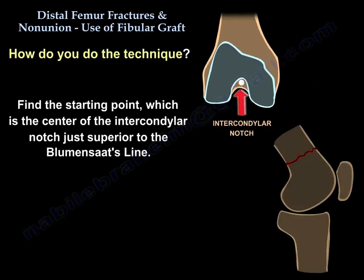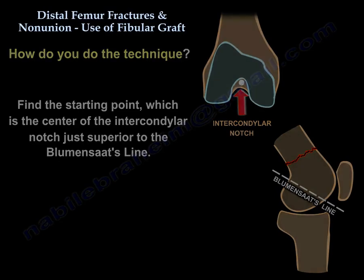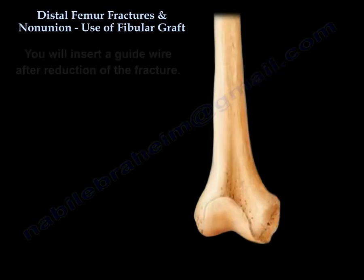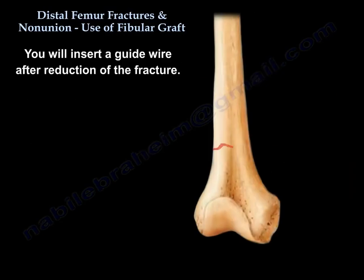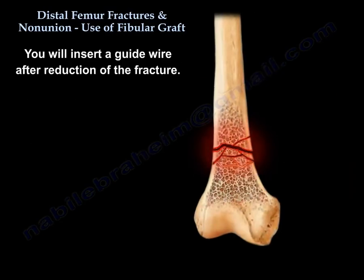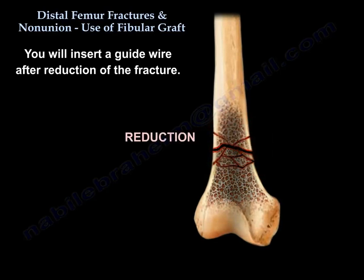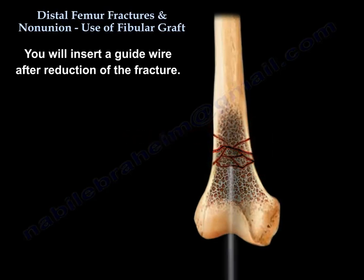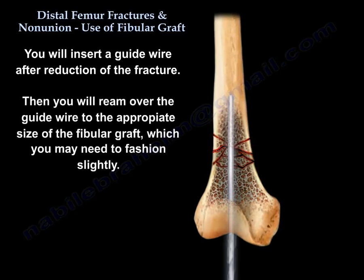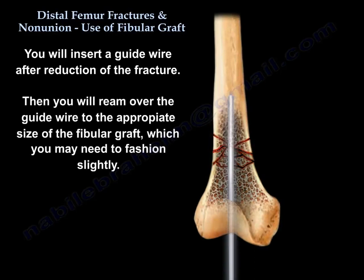To perform the technique, you will find the starting point, which is the center of the intramedullary notch just superior to Blumensaat's line. You will insert a guide wire after reduction of the fracture. Then you ream over the guide wire to the appropriate size of the fibular graft, which you may need to fashion slightly.